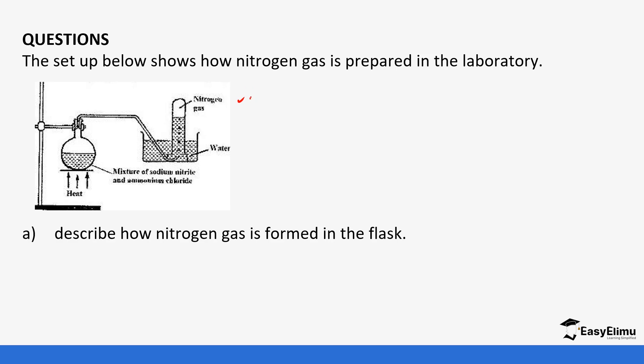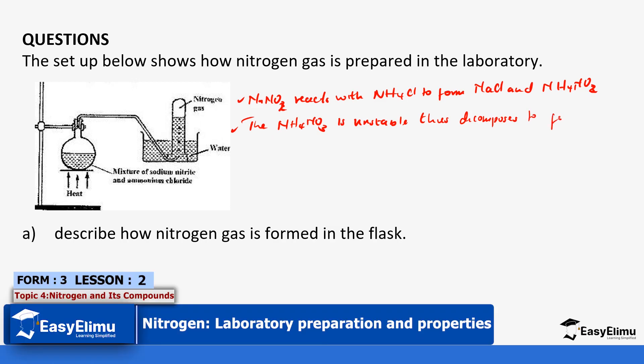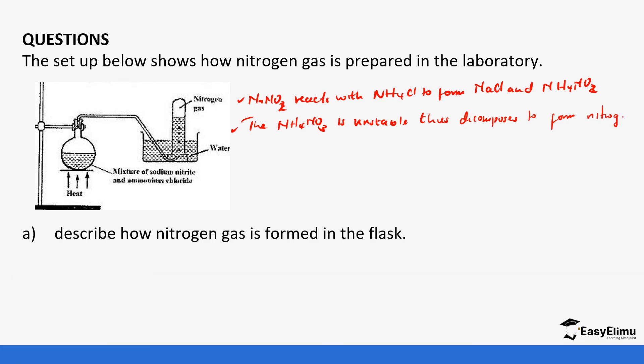We said the first step is sodium nitrite reacts with ammonium chloride to form sodium chloride and ammonium nitrite. This ammonium nitrite is unstable, so it decomposes to form nitrogen and water. So that's how nitrogen is formed in the flask.